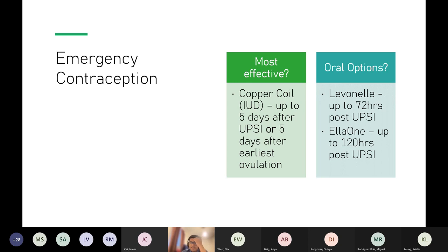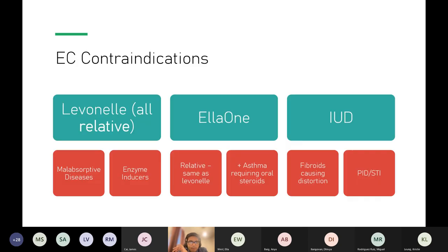The two oral emergency contraception options are levonorgestrel (e.g., Levonelle) within 72 hours, and ulipristal acetate (ellaOne) within 120 hours. It's worth learning the brand names as these are almost always used in real-life practice, especially in GP settings.